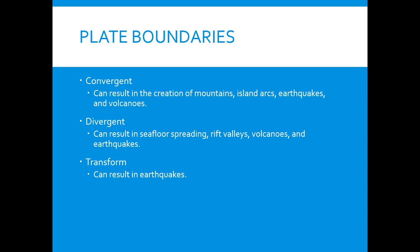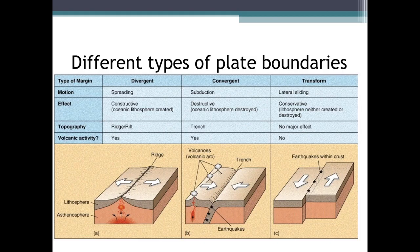Convergent boundaries are where two plates are colliding — this is where you can get mountains, island arcs, earthquakes, and volcanoes. Divergent boundaries are where two plates are moving away from each other — this is where you get seafloor spreading or rift valleys, and it can also cause volcanoes and earthquakes. Transform boundaries are where two plates are sliding next to each other, and this can result in earthquakes.